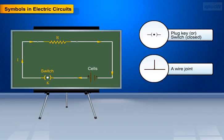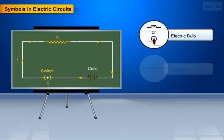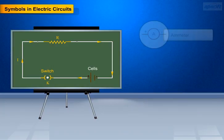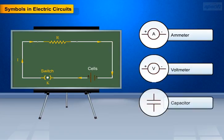Wire joint, wires crossing without joining, electric bulb, a resistor, variable resistance or rheostat, ammeter, voltmeter, and capacitor.